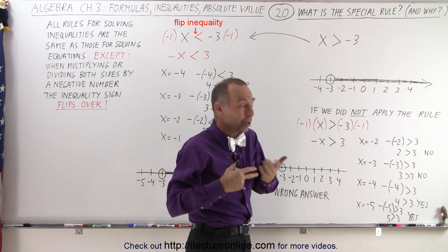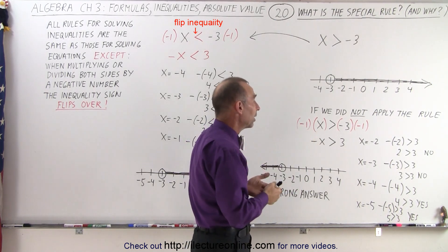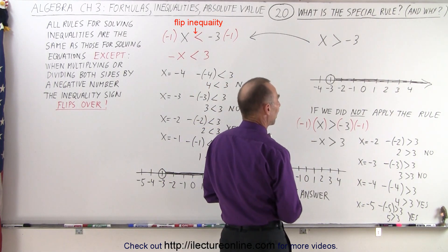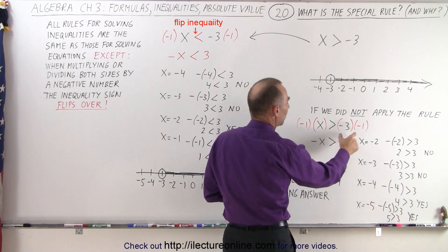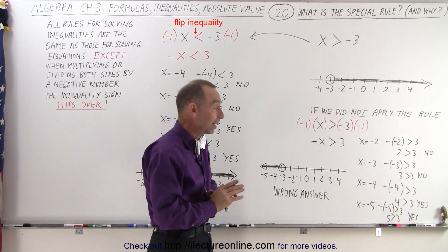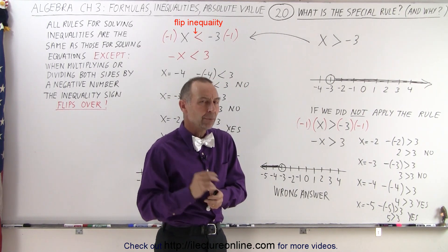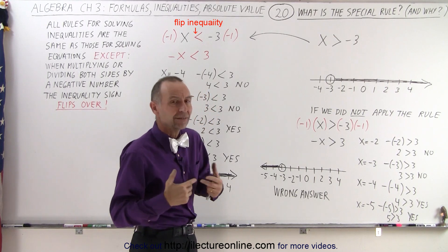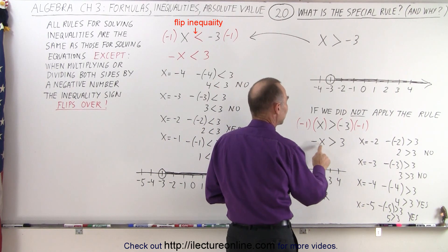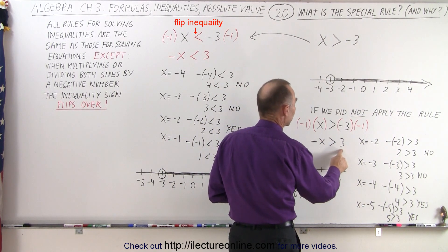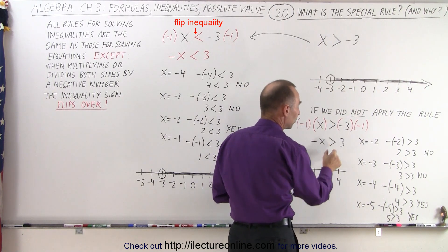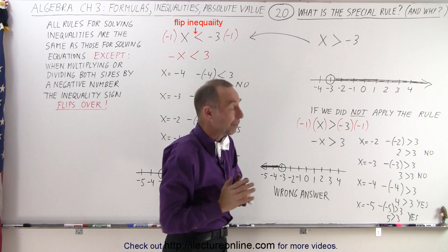Now let's say we multiply both sides of the inequality by a negative number without applying the rule of flipping the inequality sign. We multiply the left side by negative 1 and the right side by negative 1. If that were an equal sign, that would be perfectly fine. But we cannot do that with an inequality sign — let's see why not. Without flipping, we end up with negative x is greater than 3.